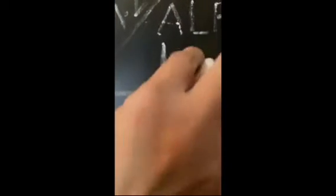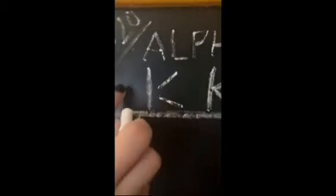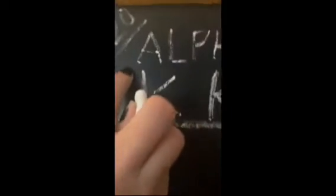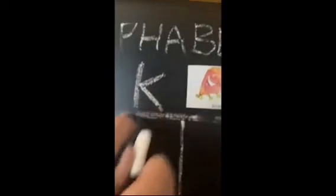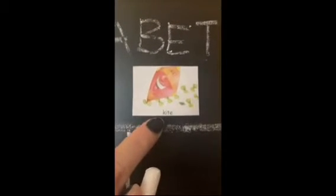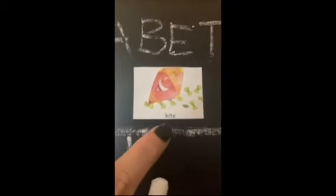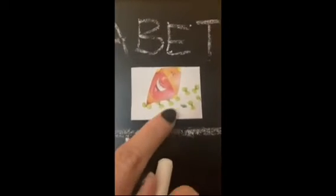To write K, we would need a standing line and two slanting lines. The two slanting lines will join the standing line. This is alphabet K. K for kite — we all fly kites during festivals, on Independence Day, right children? K for kite.